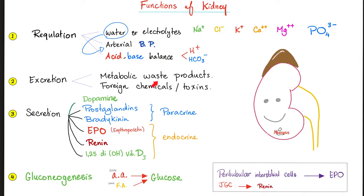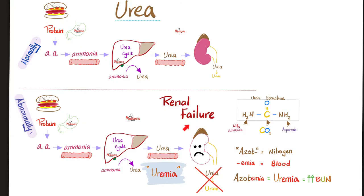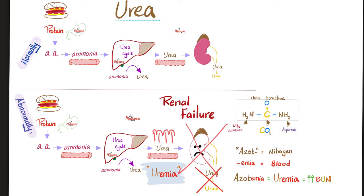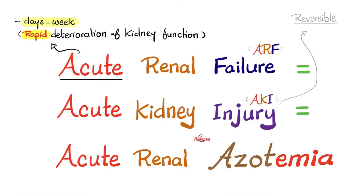One of the kidney's jobs is to get rid of waste products like urea and creatinine. If the kidney fails, urea piles up in the blood because the kidney can no longer excrete it — this is called uremia. Since urea is made of nitrogen, and the word for nitrogen is 'azot,' we call this condition azotemia.